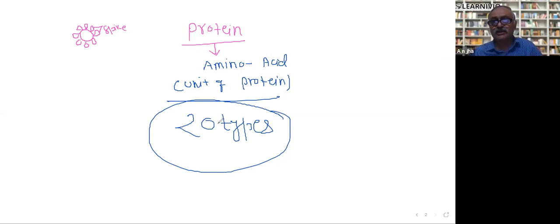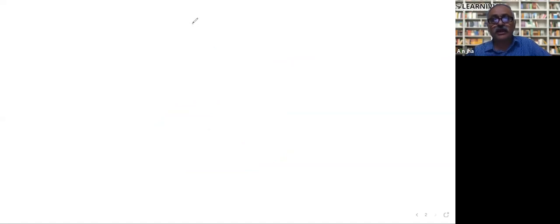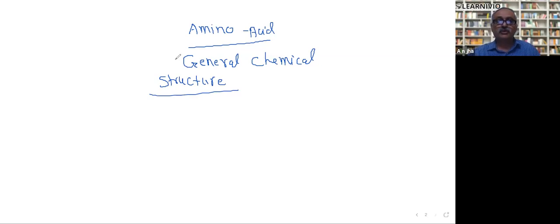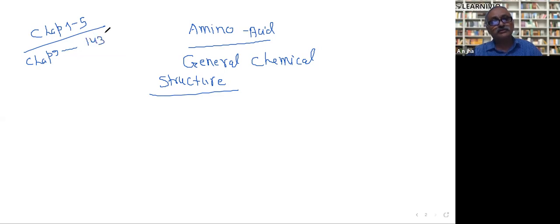Let's talk a little bit about this chemistry of amino acids. We are discussing the general chemical structure of an amino acid. This is from chapter number 1, page number 5, and also chapter number 9, pages 143, 144, and 145.